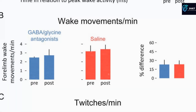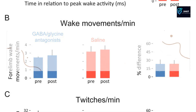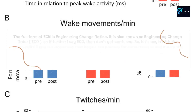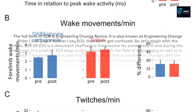The full form of ECN is Engineering Change Notice. It is also known as Engineering Change Order, or ECO, so if further I say ECO, then don't get confused.